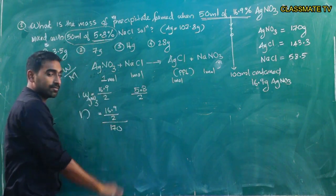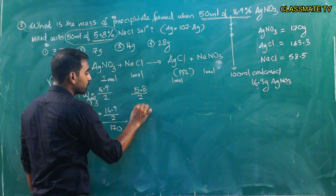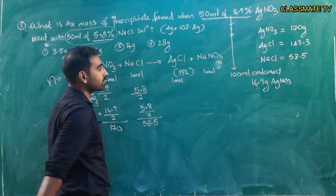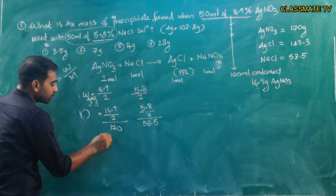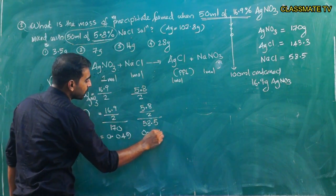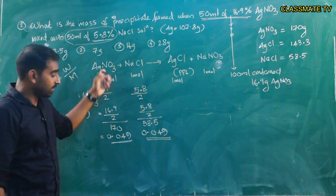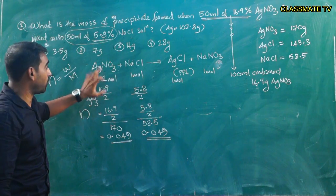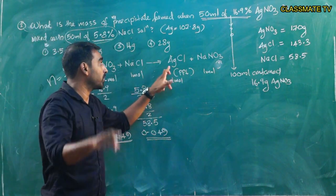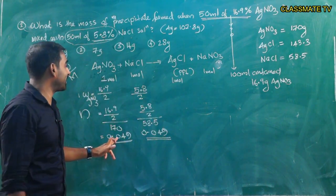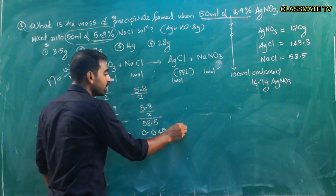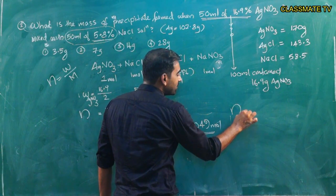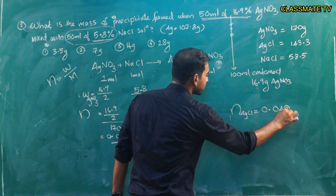Number of moles of AgNO₃ = (16.9/2) / 170 ≈ 0.049 moles. Number of moles of NaCl = (5.8/2) / 58.5 ≈ 0.049 moles. As per stoichiometry, 0.049 moles AgNO₃ reacts with 0.049 moles NaCl to form 0.049 moles AgCl.